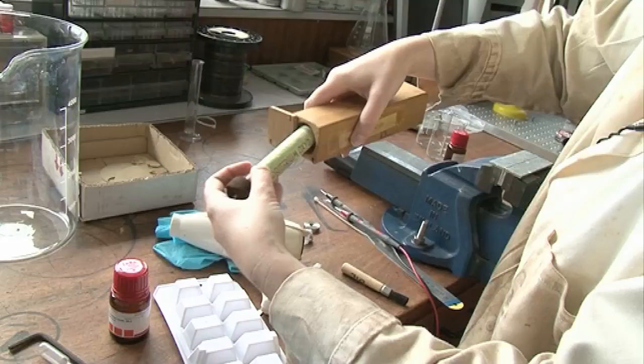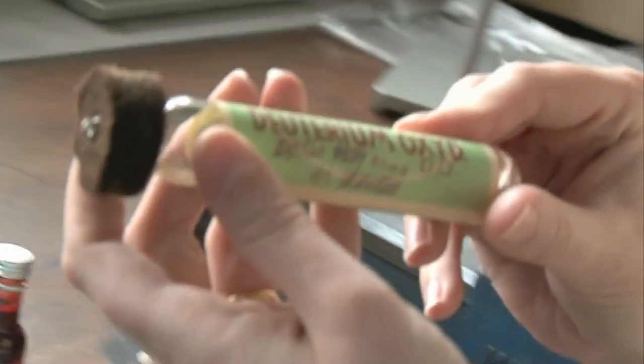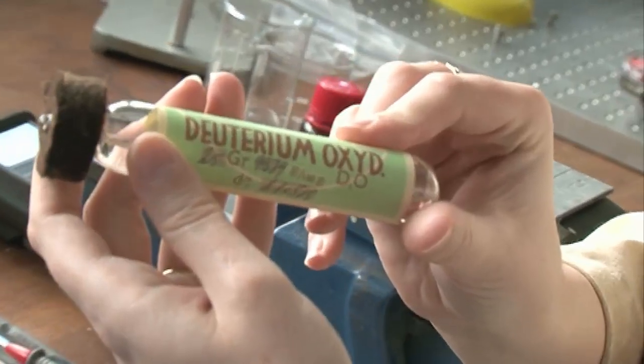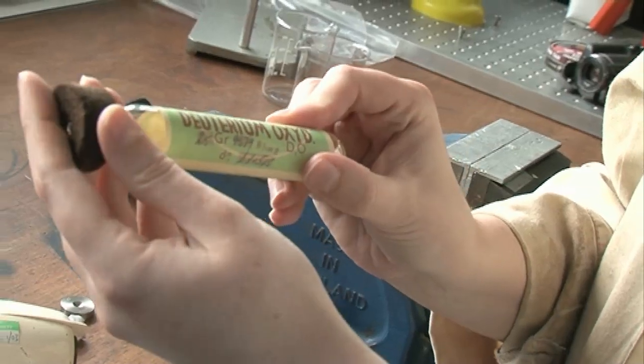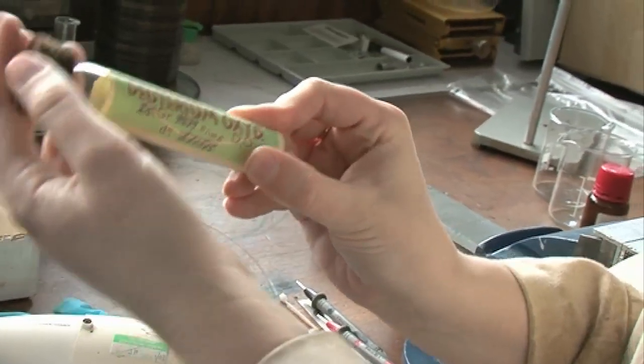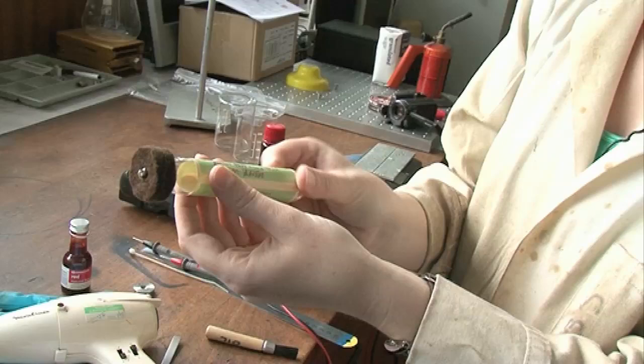I like the box. I finally worked out how to open it, which is good. What we have is a really old-school sample. Look at the writing, it looks like 1930s writing or something. I'm not quite sure how old it is, but it's a really old sample of deuterium, and it's sealed in a glass ampoule so that it remains as it is in there.